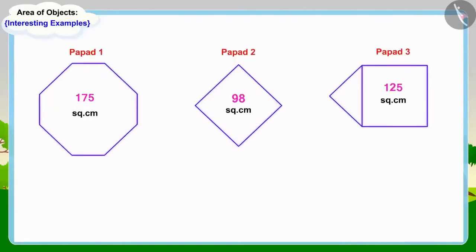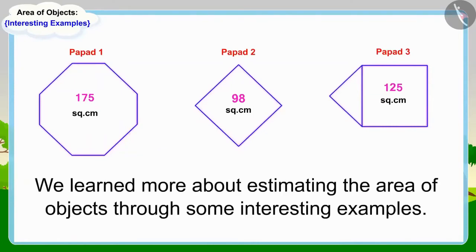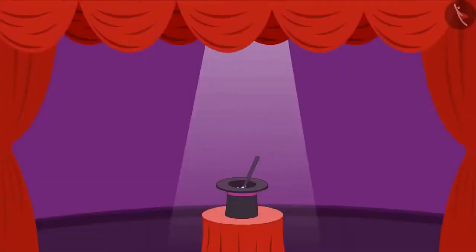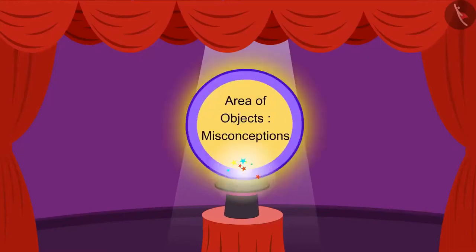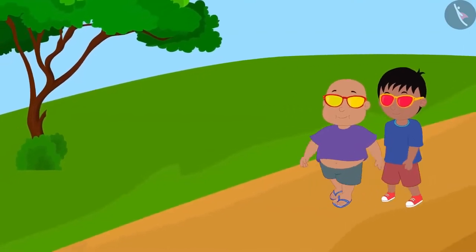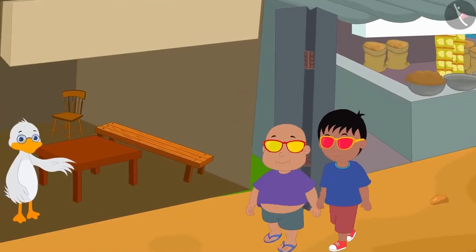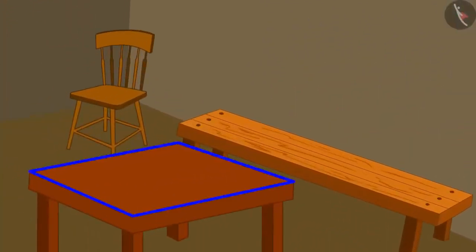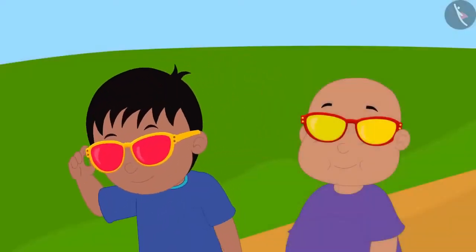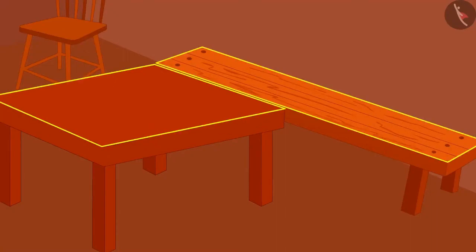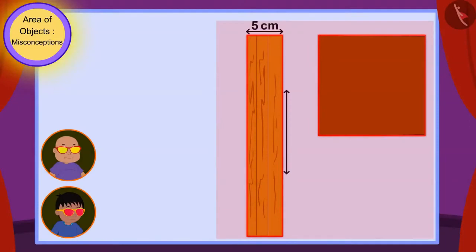In the previous video, we learned more about estimating the area of objects through interesting examples. In this video, we will see some misconceptions related to this. Raju and Bablu are out on a walk again today wearing their unique glasses. While wandering, they reached uncle's table shop. Uncle's shop has a square shaped table and a rectangular shaped table. Raju looked at the top surfaces of both tables with his glasses and could see the measurements of the sides of both tables.